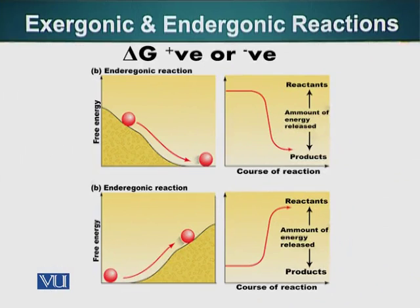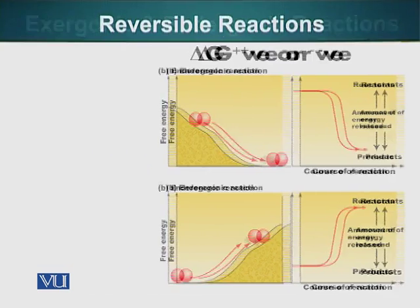In biology, these reactions are not always one-sided. If a reactant can become a product, the product can also become the reactant. So these are reversible reactions.